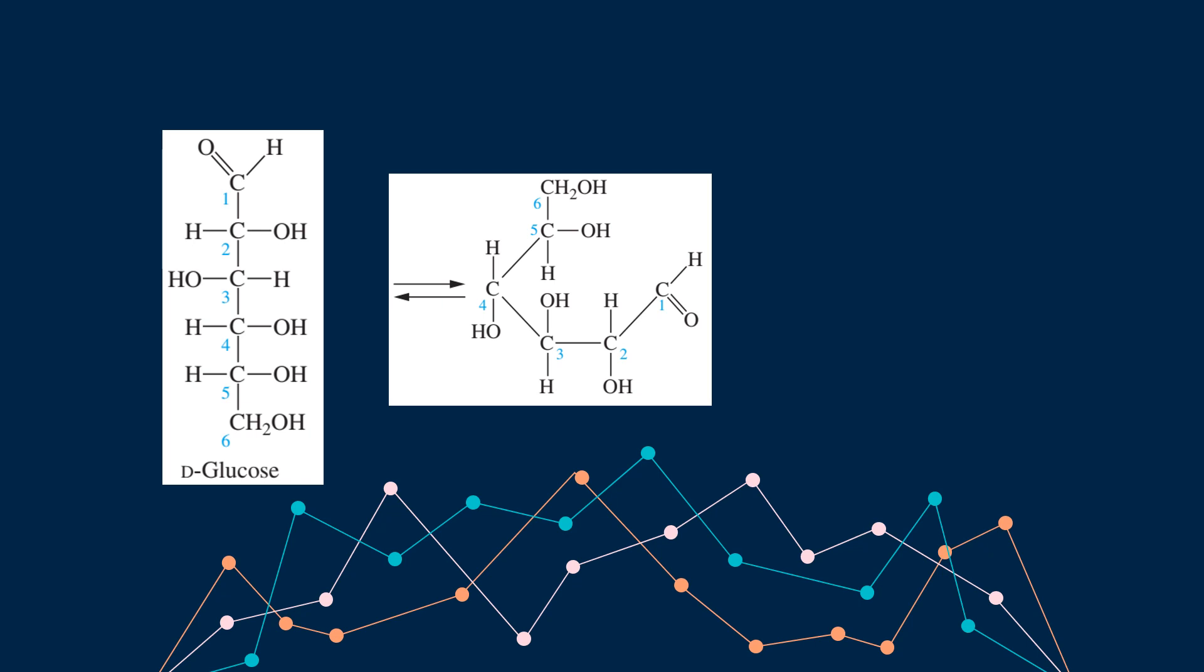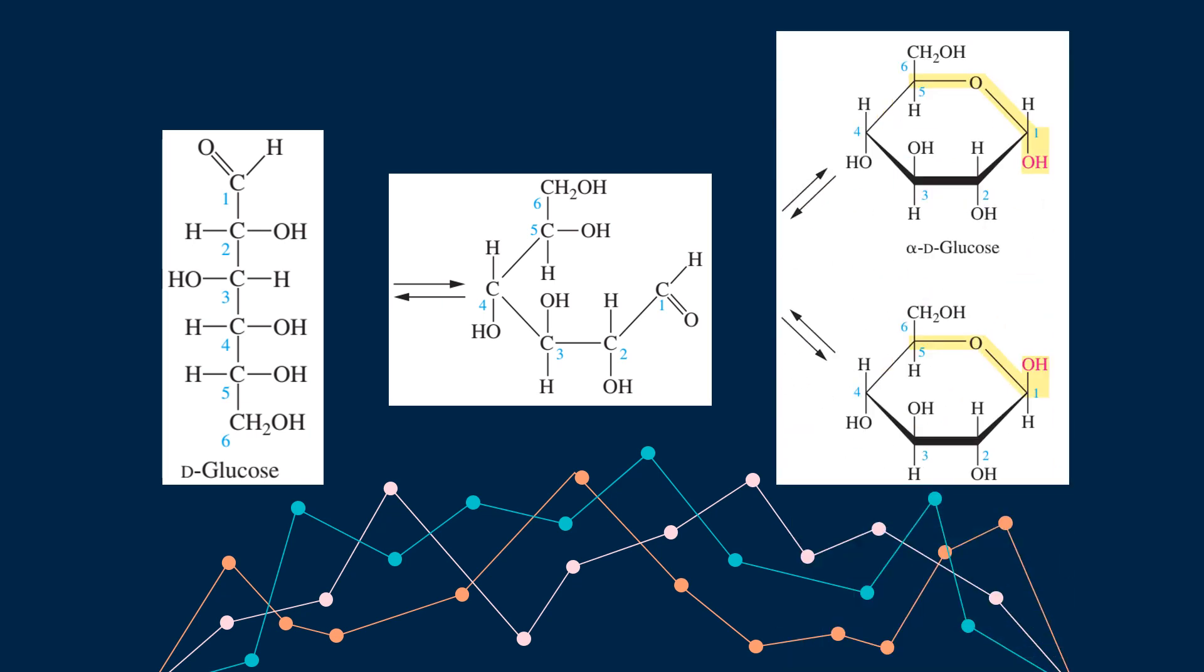When the carbonyl group of the aldehyde portion of the glucose molecule reacts with the carbon 5 hydroxyl group, the product is a cyclic intramolecular hemiacetal. So for D-glucose, two isomers can be formed from this reaction, and these are called alpha and beta glucose. Take note also that in this process, the carbonyl carbon, which is carbon number 1, becomes a chiral center in this process, which gives the alpha and the beta forms of glucose. This chiral center is what we call the anomeric carbon. The hemiacetal is highlighted in yellow.